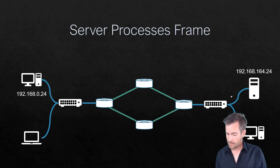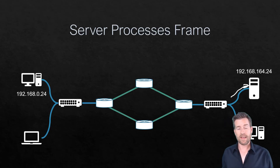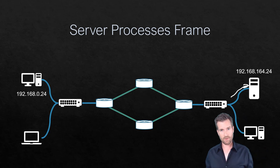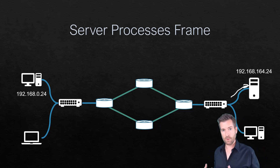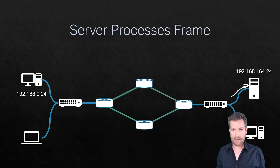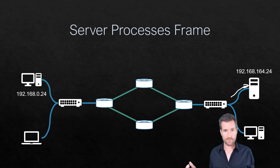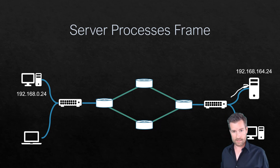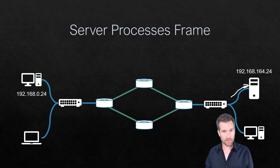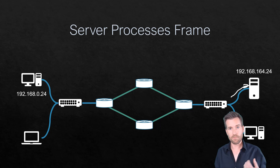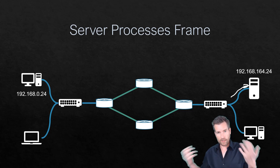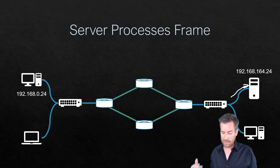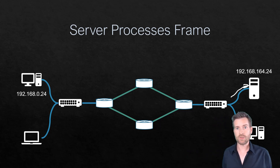That frame arrives at the server. The server checks that the destination MAC address matches its own, verifies nothing has been altered via the frame check sequence, accepts the frame, and then unpacks layer three, layer four, and layer five to determine what the request is, and then reforms a response to that request.